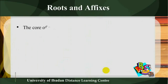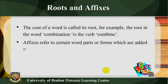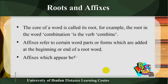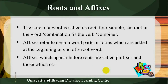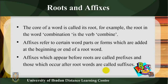Roots and affixes: the core of a word is called its root. For example, the root in the word combination is the verb combine. Affixes refer to certain word parts or forms which are added at the beginning or end of a root word. Affixes which appear before roots are called prefixes, and those which occur after root words are called suffixes.